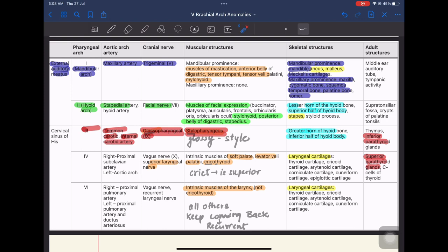Now coming on to the first arch which is also called the mandibular arch. So we get the external auditory canal from the first cleft. The artery is the maxillary artery, nerve is the trigeminal nerve and the muscle elements are the muscles of mastication. Also the anterior belly of digastric, tensor tympani, tensor veli palatini and mylohyoid muscle.